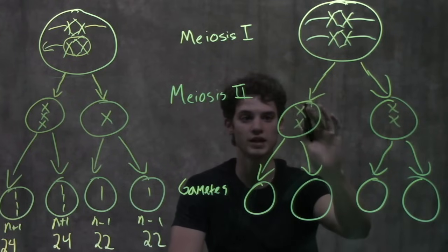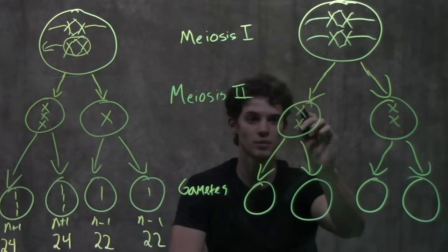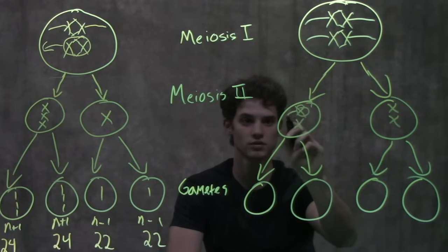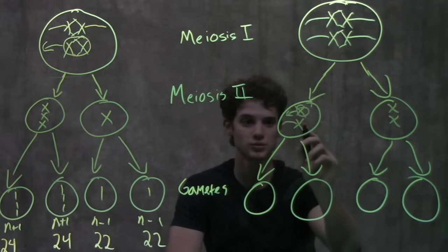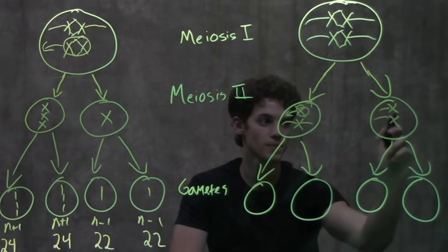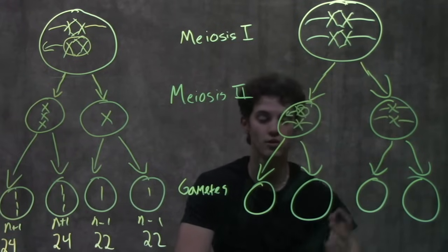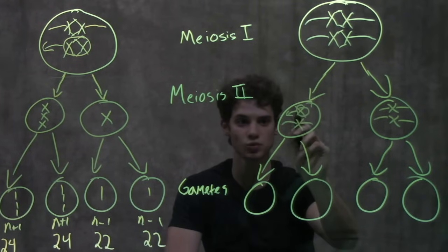Let's say that one chromosome doesn't separate its chromatids correctly—they both go to one side while the rest split correctly. Now what does this mean for the gametes afterwards?